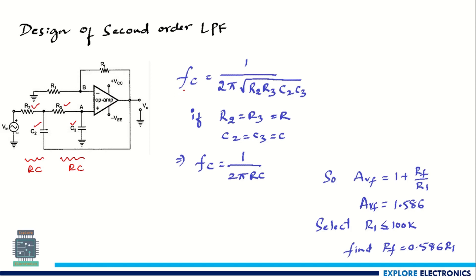The cutoff frequency of this second order low pass filter is FC = 1 / (2π √(R2·R3·C2·C3)). If we choose R2 = R3 = R and C2 = C3 = C, the cutoff frequency expression reduces to FC = 1 / (2πRC), the same as in the first order low pass filter, provided R2 = R3 and C2 = C3.